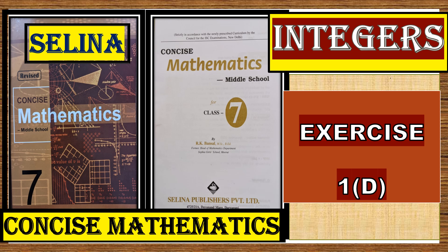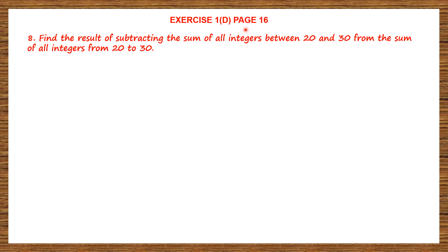Hello students, let's do integers exercise 1, page number 16, question 8: find the result of subtracting the sum of all integers between 20 and 30 from the sum of all integers from 20 to 30.